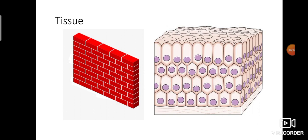The next term is tissues. We have to imagine cells like bricks. If we arrange the bricks in layers, that is called tissues. To construct a building, we have bricks; next we arrange the bricks to make a wall, then a room, and so on. Like that, a group of cells joined together forms tissues. In this picture you can see numerous cells arranged in layers — just as bricks are arranged, cells are arranged like that.